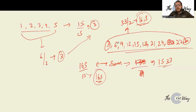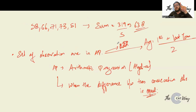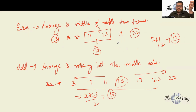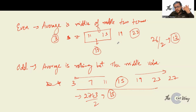So to summarize for an AP series: use first term plus last term divided by 2 for the average. For odd number of terms, the middle term is your average. For even number of terms, the middle of the middle two terms is your average. Direct questions on this appear in exams like NMAT and SNAP.